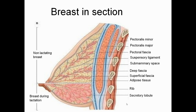Here in this picture, the breast is divided into two parts — one is the non-lactating breast and the other is during lactation. During lactation, you can see the lobules are enlarged, filled with milk, and the upper part of the breast shows the lobules that are the ducts for milk.